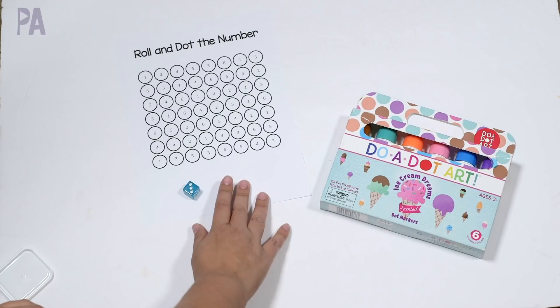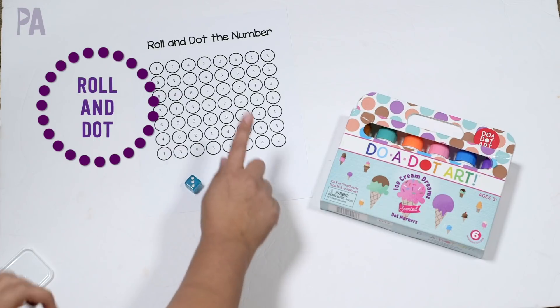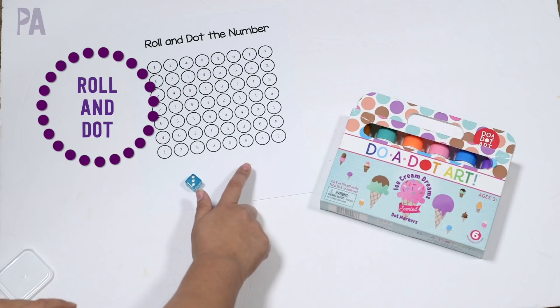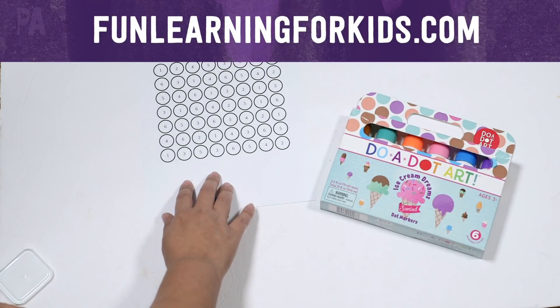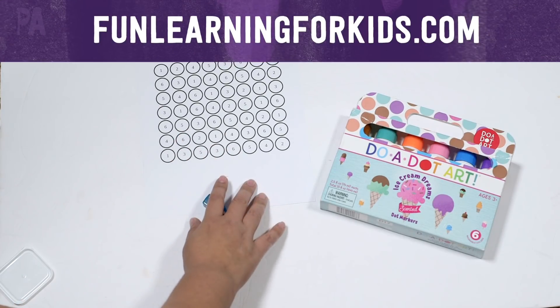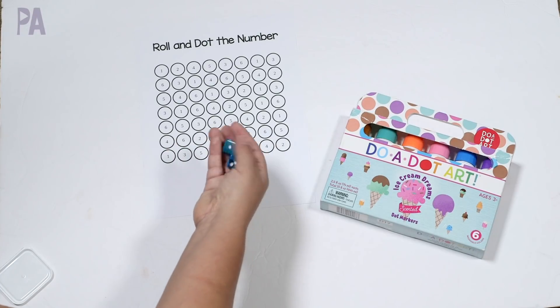So this is a free printable. It's called roll and dot the number, free, free, free. Yes, it's a free printable. And you know, I always put the links right down below in the description box so you can go right to it. Just make sure you download the right thing. So what this person has done is just made a chart and there's circles. And then on each circle, there's a number that represents the die.